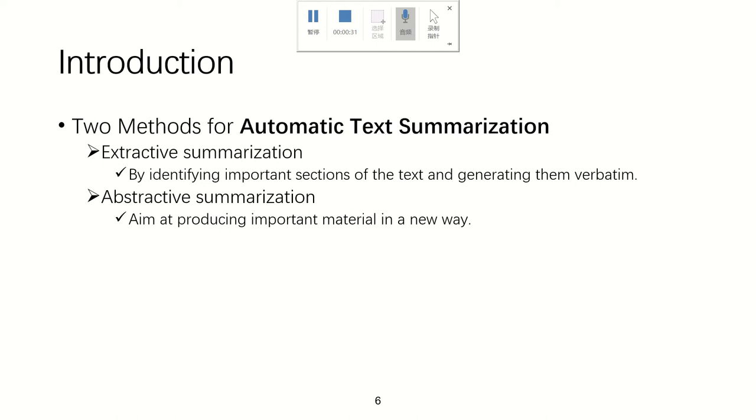As for the methods for automatic text summarization, there are two mainstream methods. The first one is extractive summarization, which is to identify important sections of the text and generate them verbatim. The second one is abstractive summarization, which is to animate producing important material in a new way.